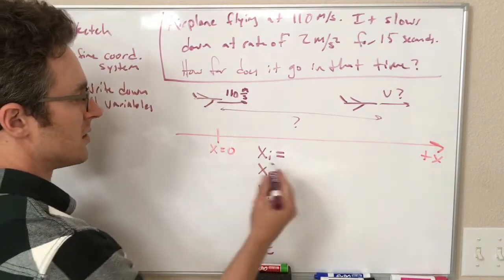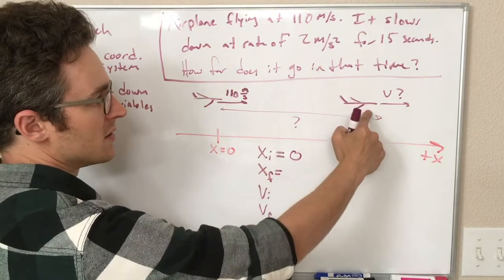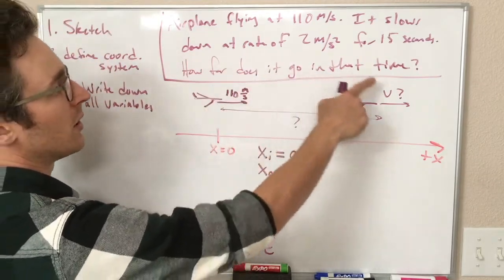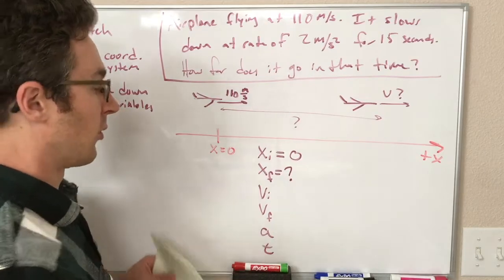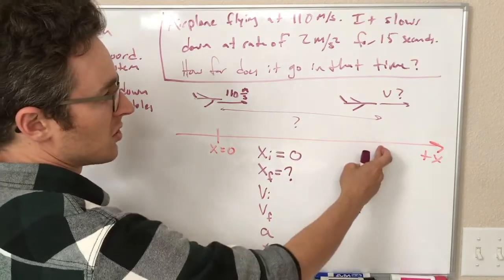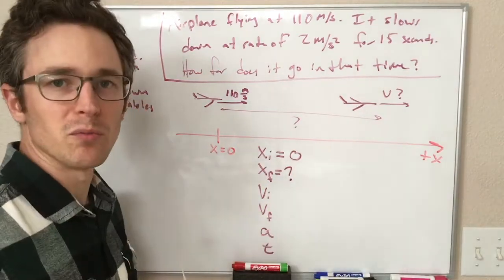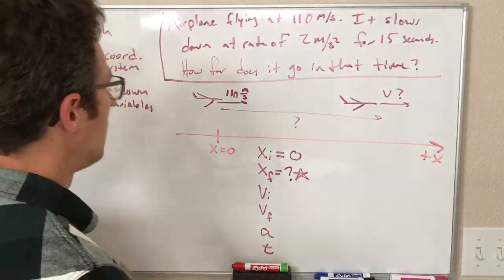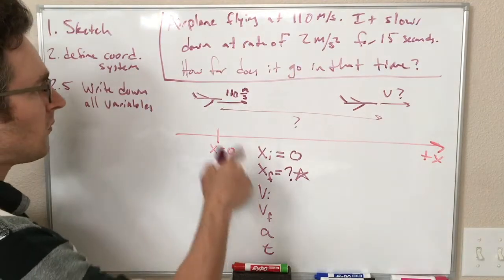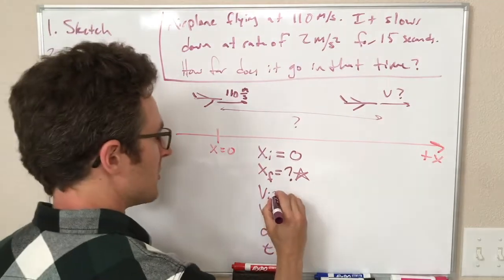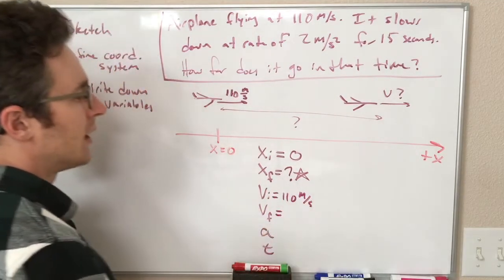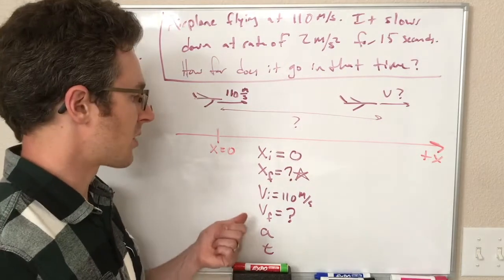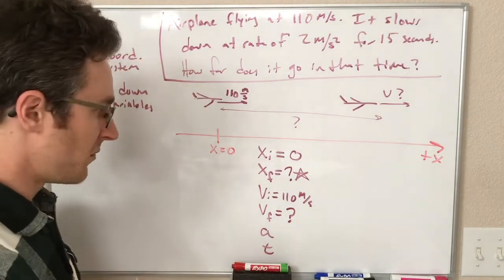So x initial, like we just defined, it is equal to zero. X final, well, that's where the plane is at the end. We don't know, right? But that is the answer. How far does it go in that time? So how far does it go is like the displacement, or the distance traveled either way. That's going to be this position, minus this position, and we're going to get some positive number of meters. So this is what we're looking for. And I'm going to put a star next to this because we're looking for it. That's our goal. So the initial here, we are also given, it starts at 110 meters per second. V final is another thing that we do not know. But in this case, we don't really care what V final is. If we can solve this problem, if we can get away with not needing to find V final, that's fine.